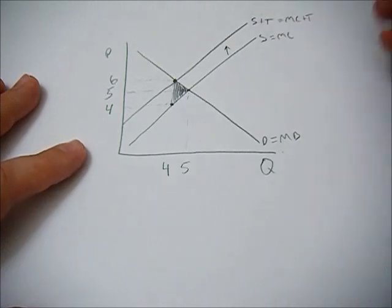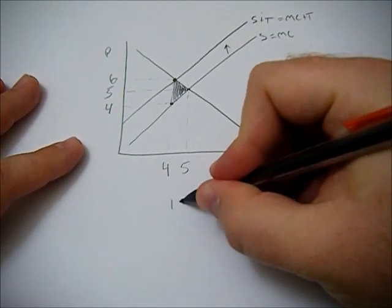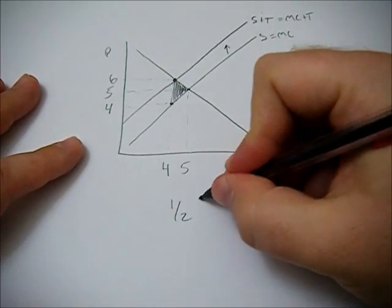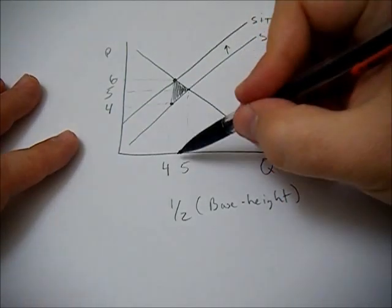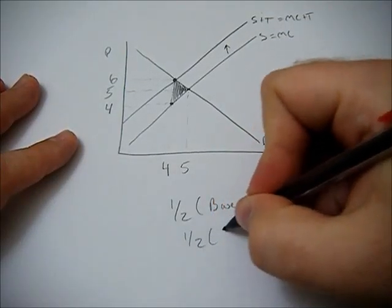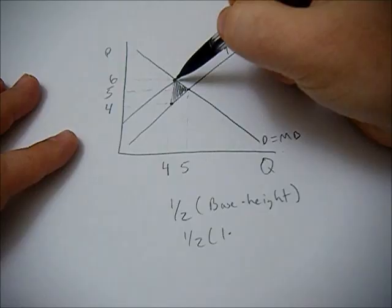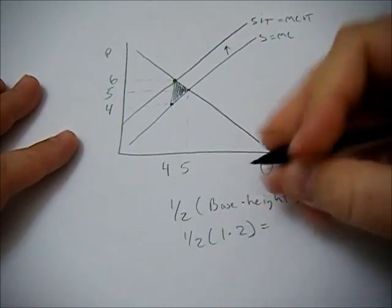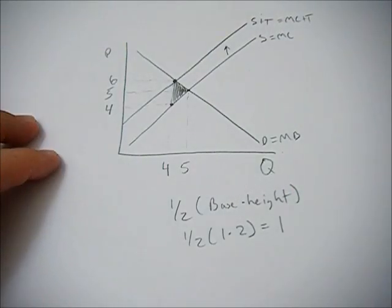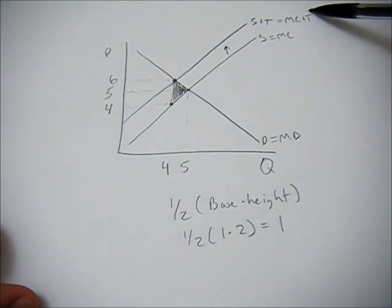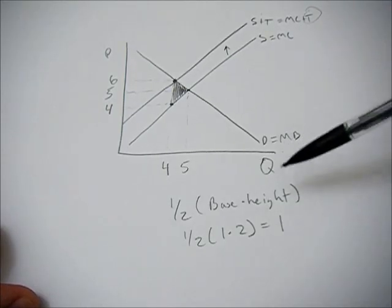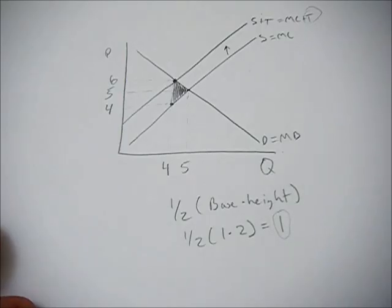The deadweight loss is simply the area of a triangle. Using the formula one-half times base times height: the base is five minus four, which equals one, and the height is six minus four, which equals two. So one-half times one times two equals one. The deadweight loss in the economy is one, meaning that without the tax, the economy's total surplus would be greater by one if we could eliminate that deadweight loss.